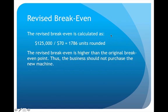For the revised break-even, we now use $125,000 for fixed costs (up $25,000) and a new contribution margin of $70 (up $10, since variable cost dropped by $10). This gives approximately 1,786 units — which is higher than our original 1,667 units. Buying the machine would require more unit sales to break even, so the decision would be no, it is not worth it to purchase the new machine.